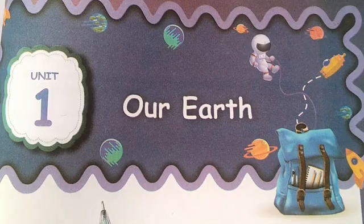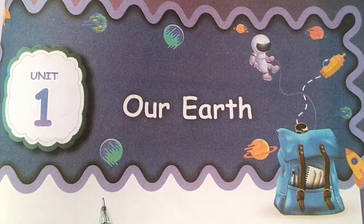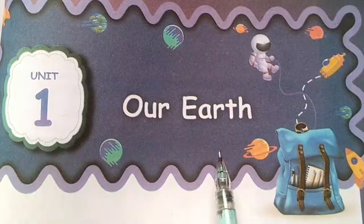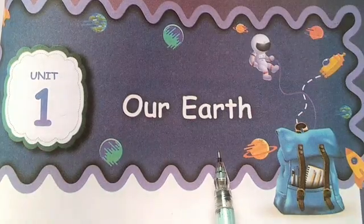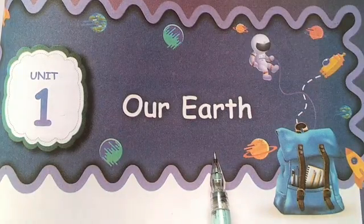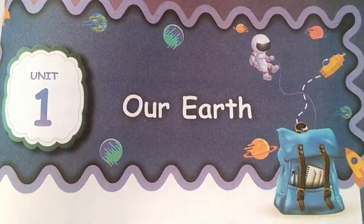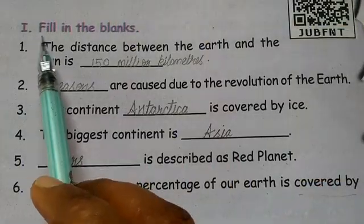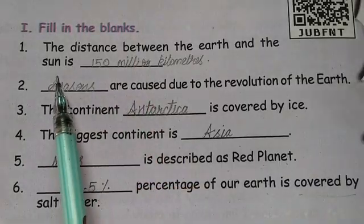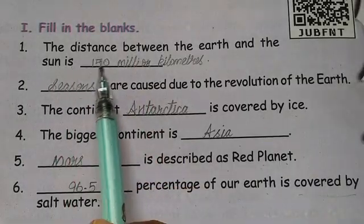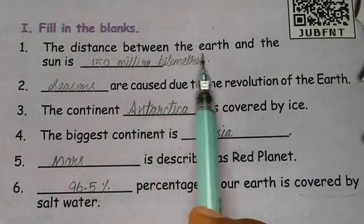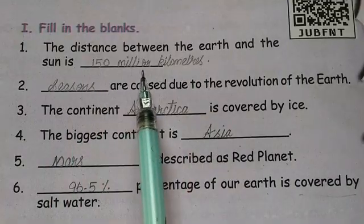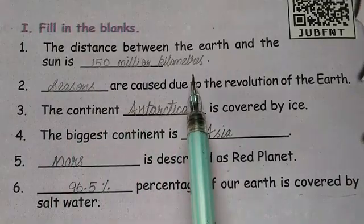Hi students, this is 5th standard Social Science Unit 1 - Our Earth. The book-back exercise answers follow. First, fill in the blanks: the distance between the Earth and the Sun is 150 million kilometers.